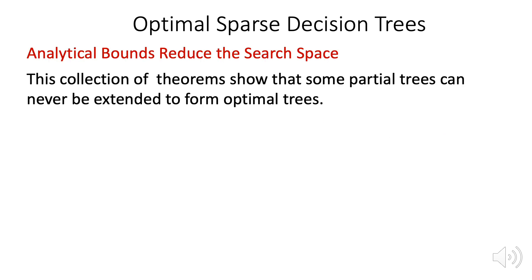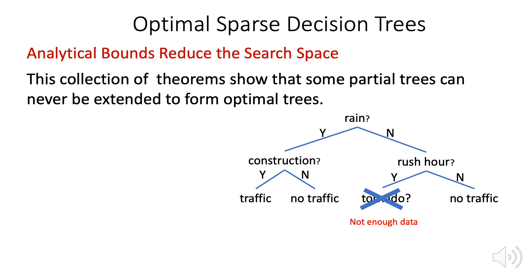Our approach uses several important insights. First, we have a collection of analytical bounds that reduce the size of the search space. And these bounds allow us to prove that certain partial trees can never be extended to form optimal full trees. And these bounds tell us that the leaves of optimal trees must capture enough data and be accurate enough.